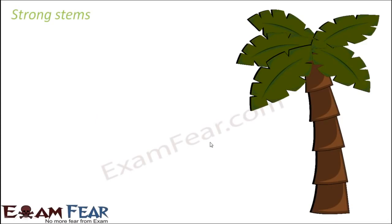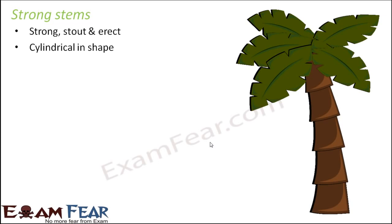The first category of aerial stem we will talk about is strong stems. The name itself is self-explanatory — stems which are strong, stout, and erect. In the picture you can see a palm tree or a coconut tree. If you observe their stems, you can see that they are really hard, woody, and strong. They are cylindrical in shape. A palm tree is one very good example of a strong stem.